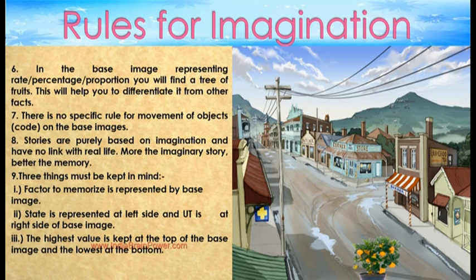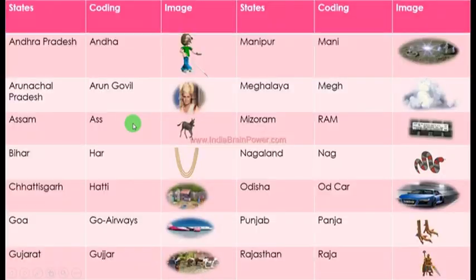Number one: the factor to memorize is represented by the base image. Number two: the state is represented on the left side and the UT on the right side of the base image. Number three: the highest value is kept at the top of the base image and the lowest at the bottom. Now let's start learning the codes or keywords for all states and union territories.